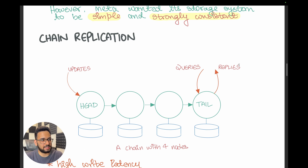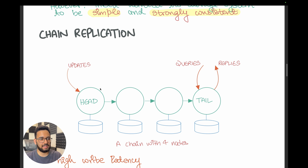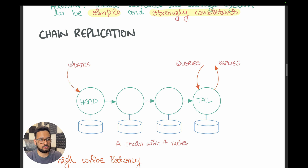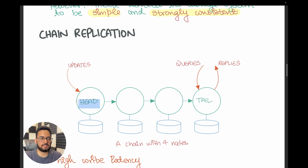This is where they went with a rather unconventional approach — chain replication. In this strategy, nodes are laid out in a linear manner, like a linked list. The first node is called the head and the last is called the tail. The head receives all write requests, persists the data into its storage, and propagates it down the chain. Each node does the same until the update reaches the tail and the tail has successfully applied that update. The tail is then responsible for acknowledging the write back to the client.